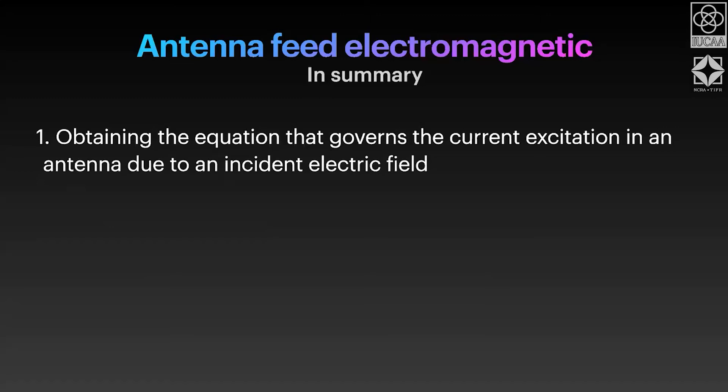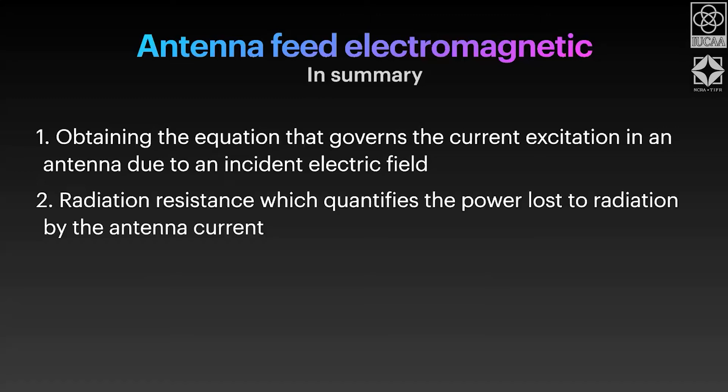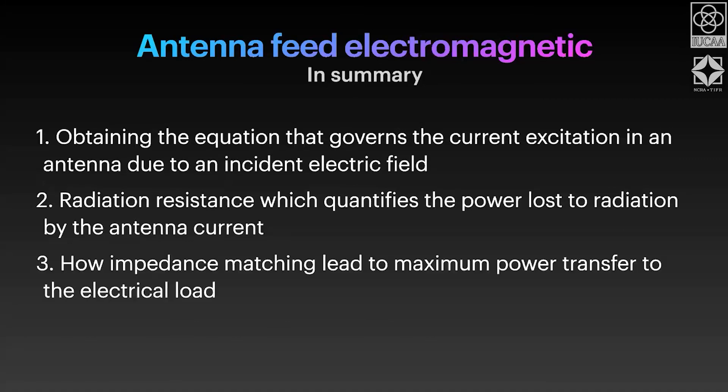This would pretty much require just some calculus of variations, nothing more than that. So this is supposed to give a still very rough idea of how exactly radiation that is incident on our antenna feed gets converted to a current, what are the circuit elements we need to consider for us to get power out of it, and how to maximize that power. Eventually when you go through the worksheets, you would have gotten to the equation that governs the current excitation in our antenna, you would have found out how to calculate radiation resistance for a given electrical current, and then how to do impedance matching. That's what it's called for maximum power transfer to the electric load.